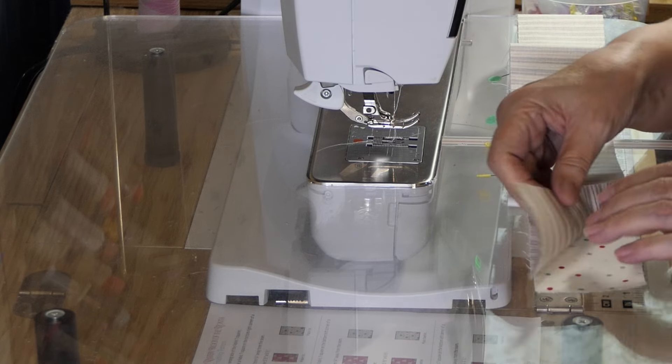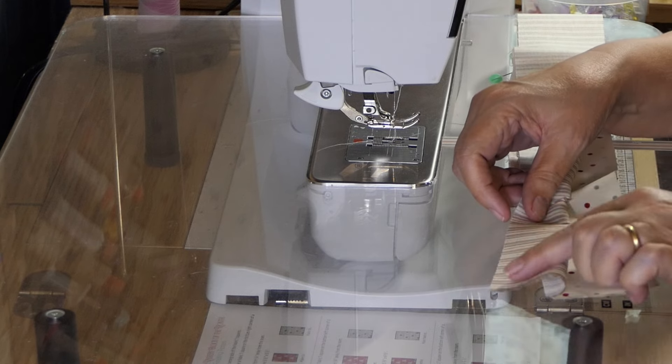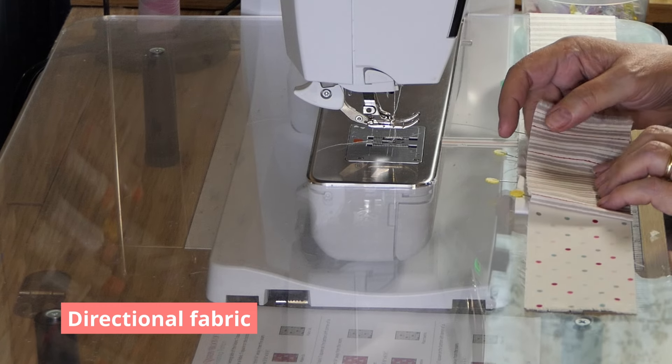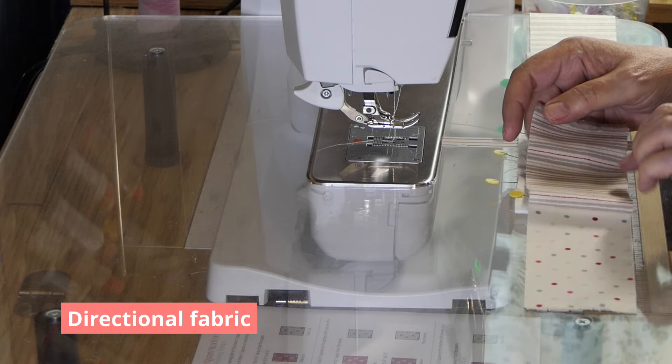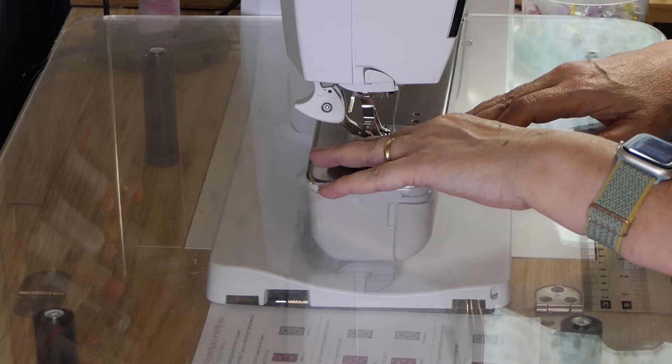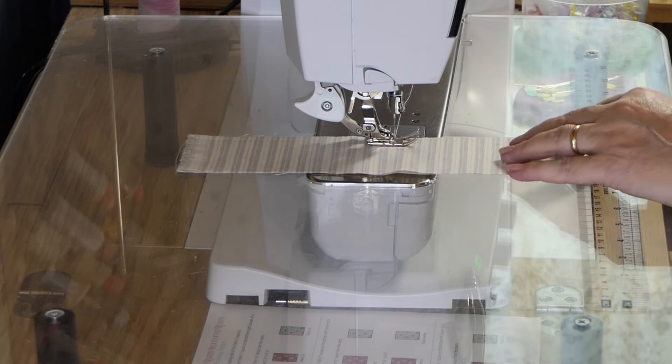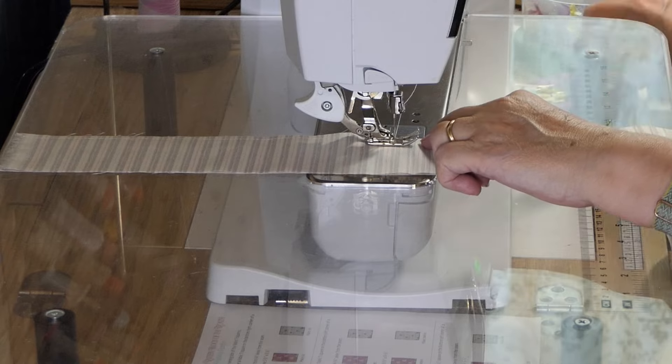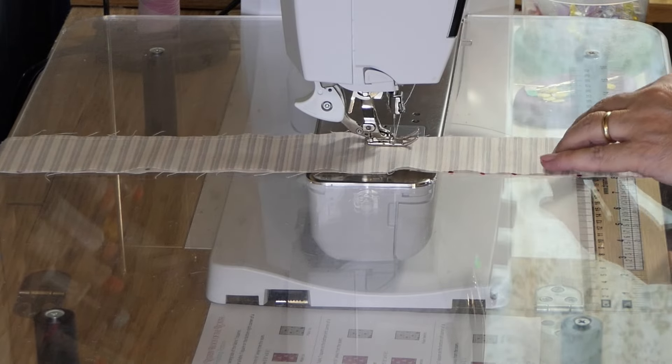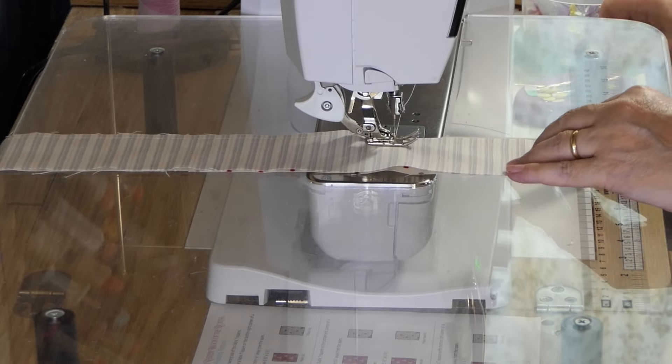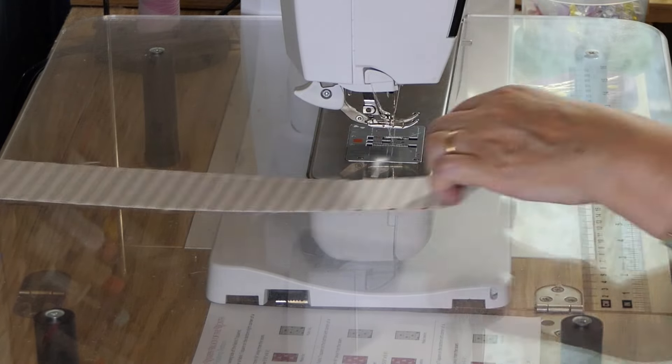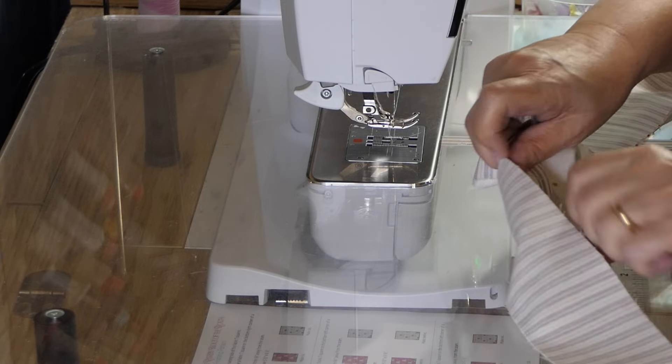Then we will put another background strip on the other side. And remember when you're cutting fabric to make sure it is facing the right direction that you want the stripes to go when you cut it.